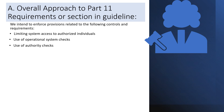Next is use of authority checks. The user department is responsible for ensuring the right persons are authorized to access the system throughout the life cycle of the system. Authority checks may include but are not limited to access control, compliance, and risk management.